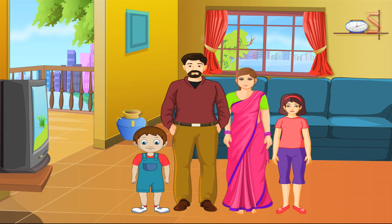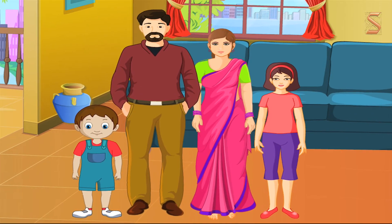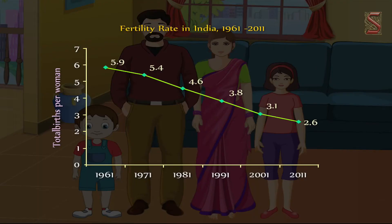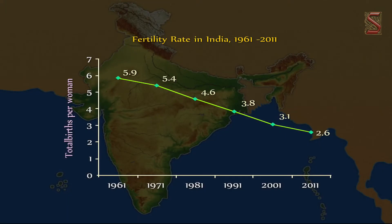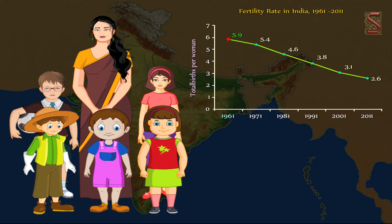The total fertility rate is the number of children likely to be born to a woman if she lives through her child-bearing years and bears children in accordance with current patterns. It is an important factor in understanding population trends. A low fertility rate indicates that couples are deciding to have fewer children, an outcome of individual, family, economic, and social considerations.